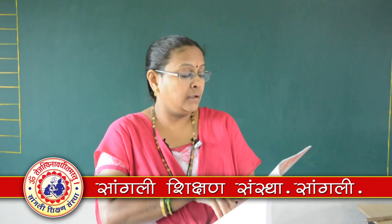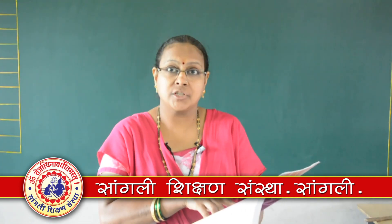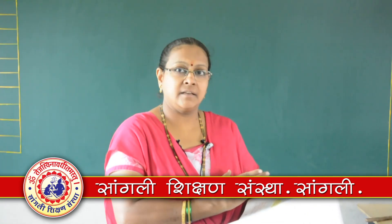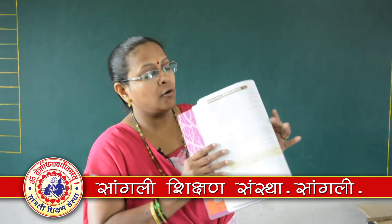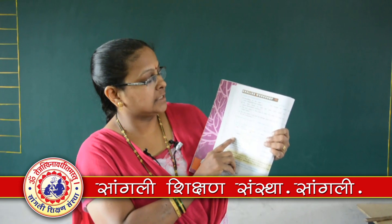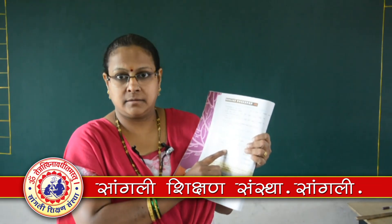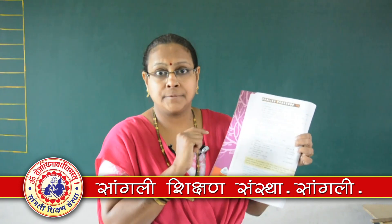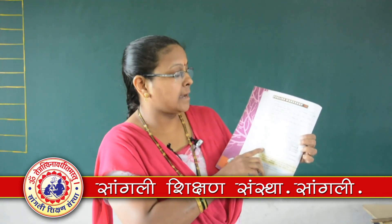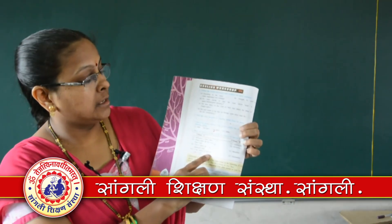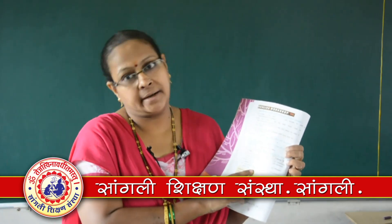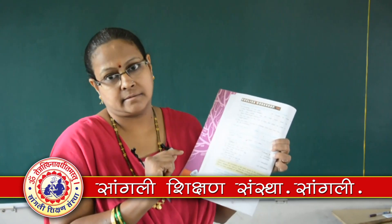The next question, number four: match Column A with Column B. They have given lines in Column A and in Column B the examples of figures of speech. The first line is 'decisions I must make' — this is inversion figure of speech. Second: 'please open up my eyes' — this is apostrophe. 'Travel down the darkened road' — alliteration is there. And last: 'I can choose to take the road of life' — this is metaphor. You have to write the direct answers.